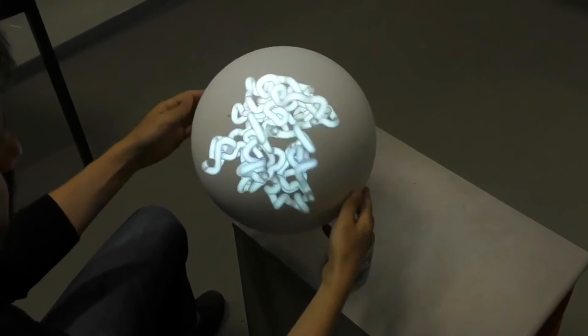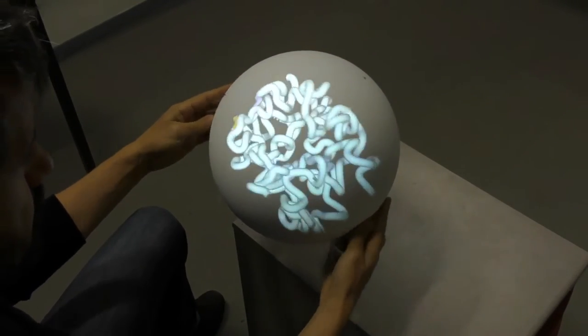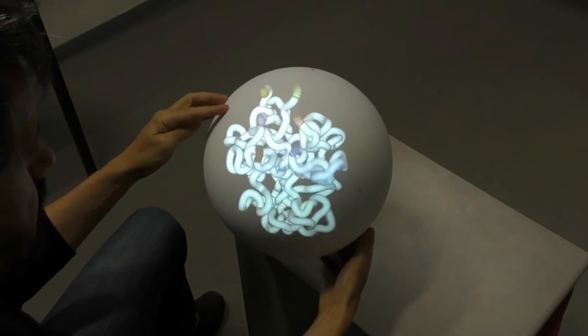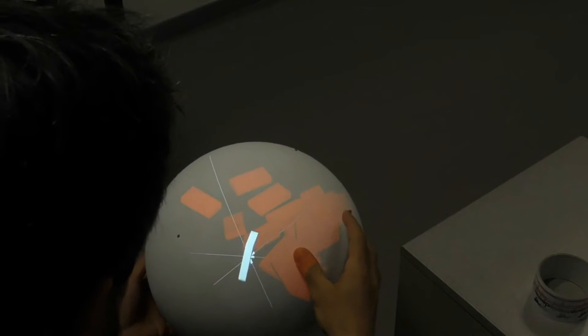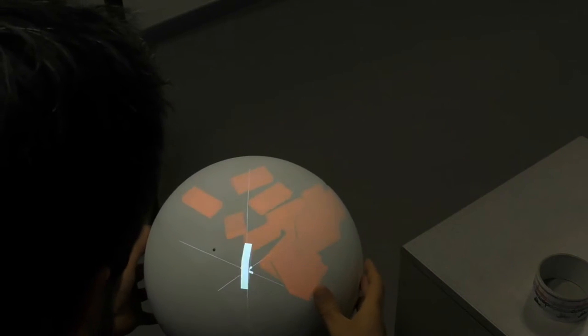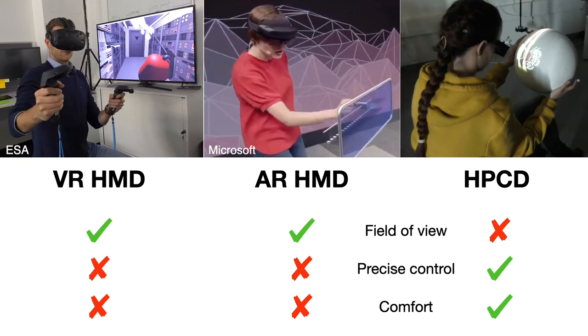Here you have an HPCD. The display is held with both hands. The viewpoint on the scene is continuously updated according to the positions of the display and the user. This creates a strong illusion of presence of the virtual objects. Compared to virtual and augmented reality, HPCD offers a smaller field of view, but it seems to provide more comfort and precision. This could make HPCD suitable for applications such as 3D modeling.